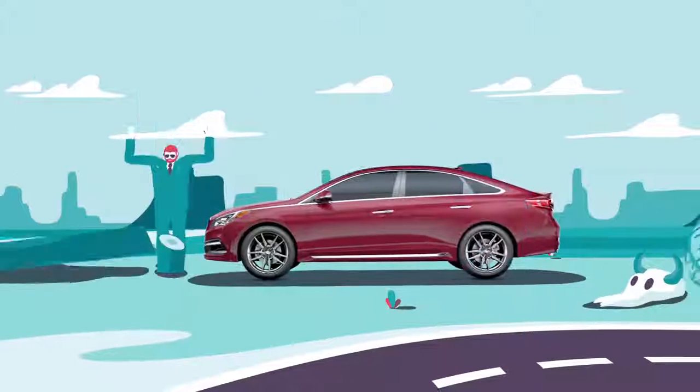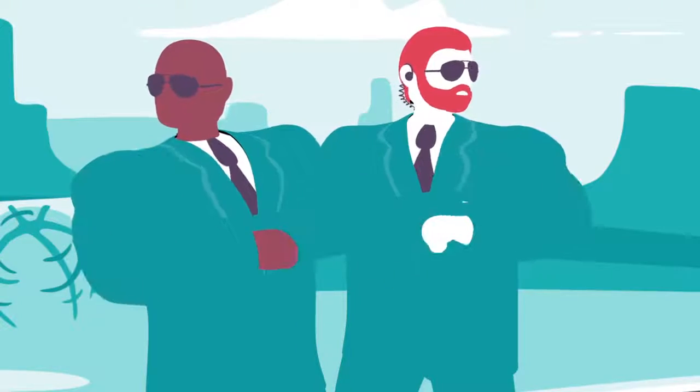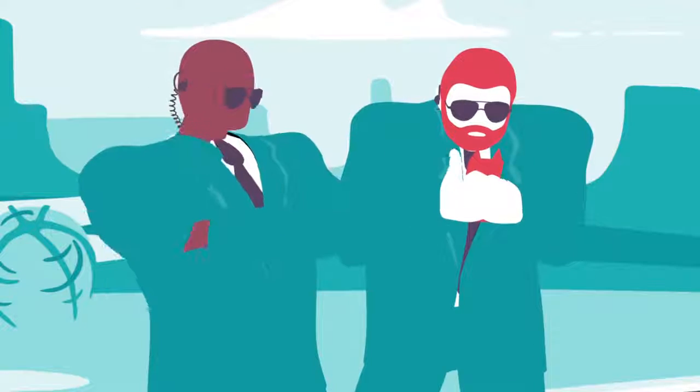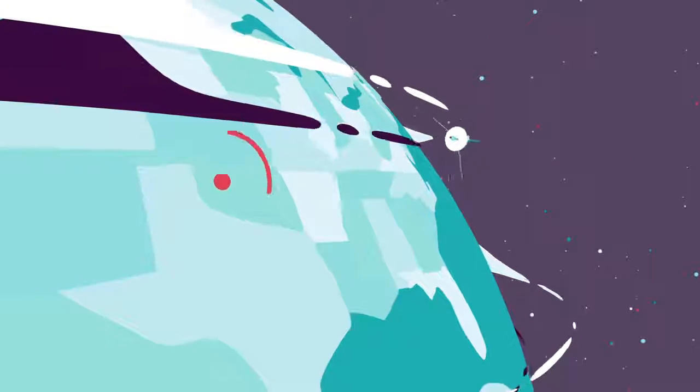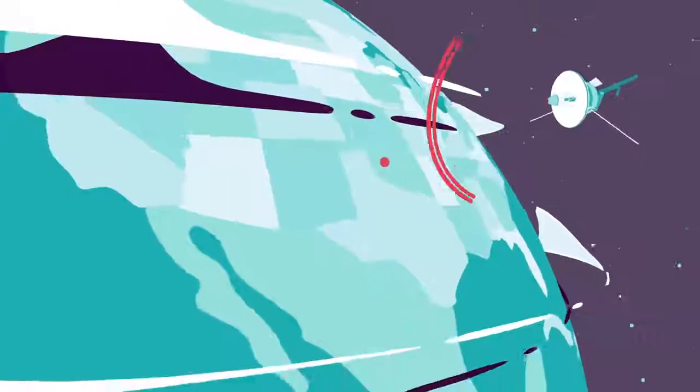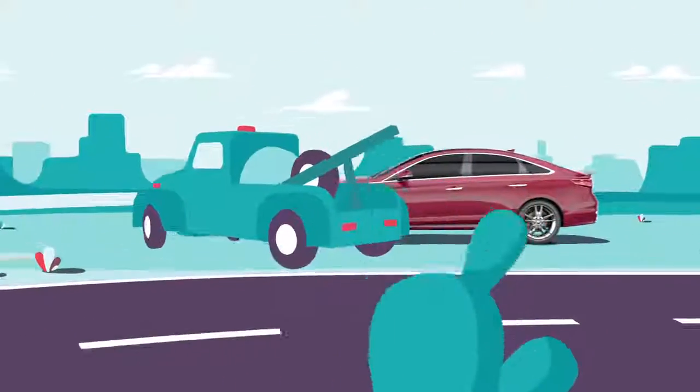Blue Link is also like having a team of Secret Service agents. No matter what happens, they're on it. And they can dial a phone faster than a teenager. That's automatic collision notification, just one of Blue Link's many safety features. If you're in an accident, it can even give your exact coordinates in case you need a tow truck or emergency assistance sent your way.